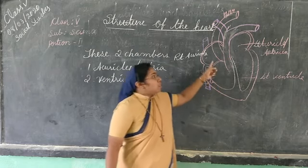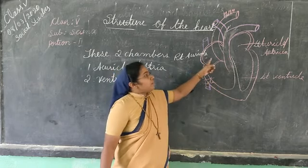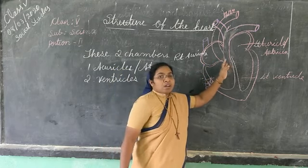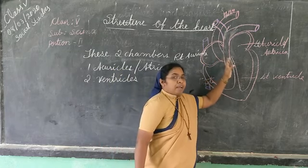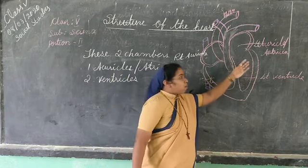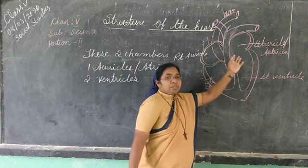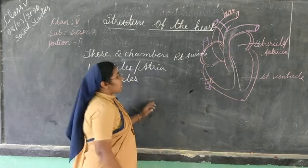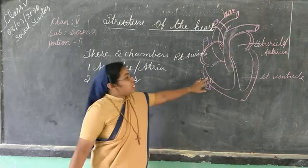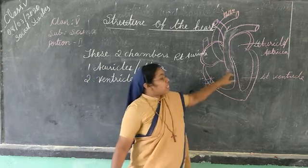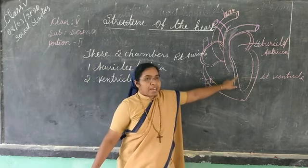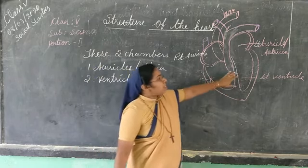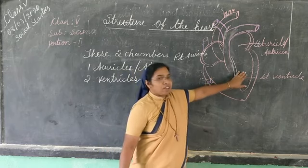So here in the auricles, the blood which comes from the body parts and the lungs is filled. The next part is ventricles — the second chamber. There are two chambers here.